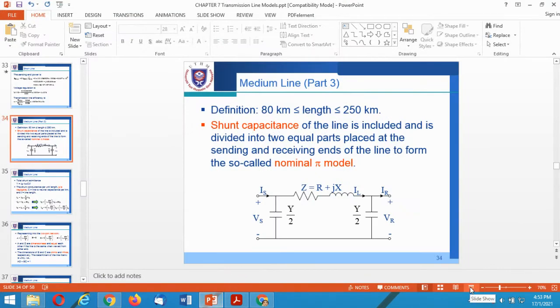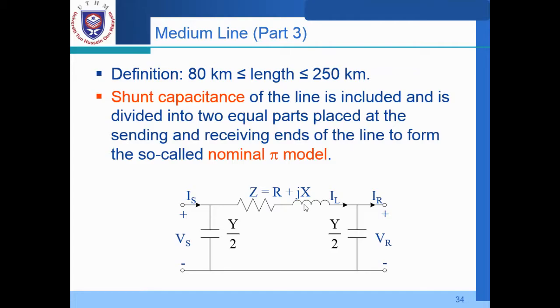And here we start with, or we proceed with the part 3 of the discussion on the medium transmission line. And we begin with the definition where basically the transmission line for the medium distance is defined in between 80 kilometer up to 250 kilometer. So we have seen the short transmission line, which is covered from 0 up to 80 kilometer. And now we move on to the second part of the transmission line, namely medium line.